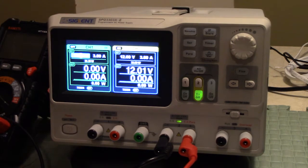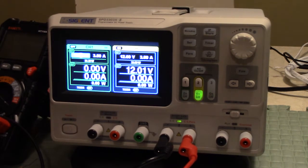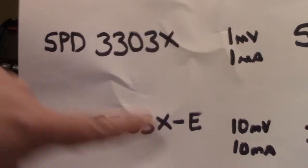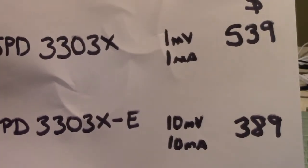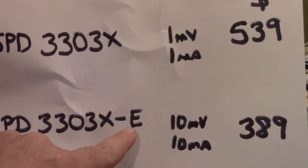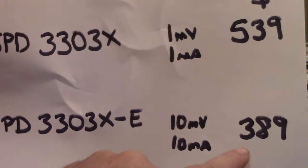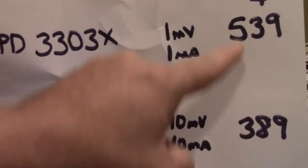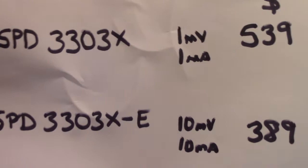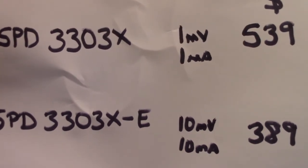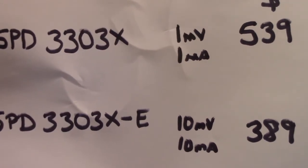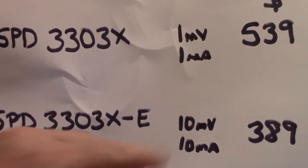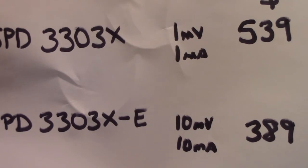Now there's two different variations of the 3303: you have the E version and the non-E version. The difference is that the economical version is a few hundred fifty dollars cheaper, and the only difference really is that the full version has one millivolt and one milliamp resolution whereas the economy version has 10 millivolt and 10 milliamp resolution.